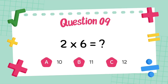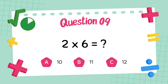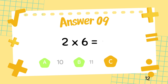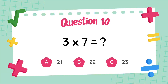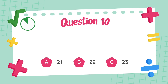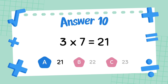What is 2 multiply 6? The answer is 12. What is 3 multiply 7? The answer is 21.